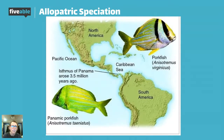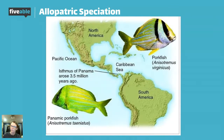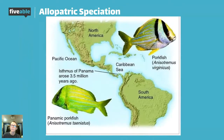A real-life example of allopatric speciation: the Isthmus of Panama, which arose about 3.5 million years ago between North and South America. We have these two fish — the Panamic pork fish and just the pork fish — that live on either side of that. They probably had a recent common ancestor and at one point were the same species, but when that Isthmus, which was basically a stretch of land that divided the Caribbean Sea, formed, those two groups separated themselves reproductively and went on to evolve separately.